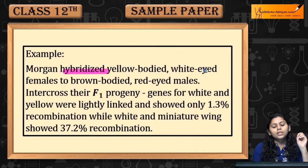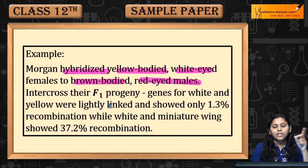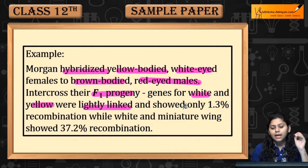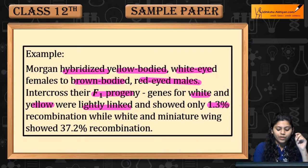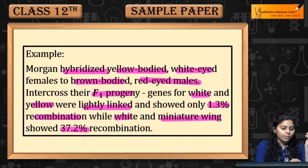For example, Morgan hybridized yellow-bodied white-eyed females to brown-bodied red-eyed males and intercrossed the F1 progeny. The genes for white and yellow were tightly linked and showed only 1.3% recombination, while white and miniature wing showed 37.2% recombination.